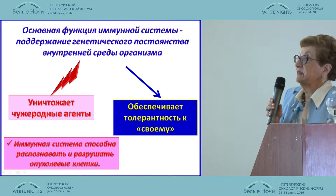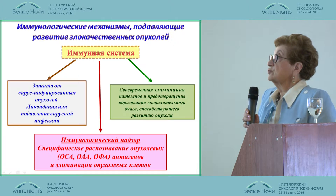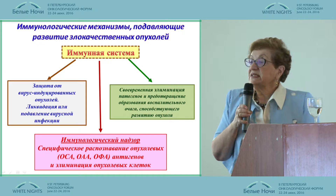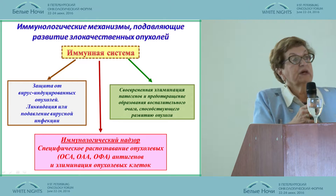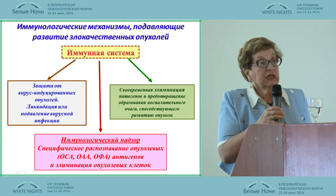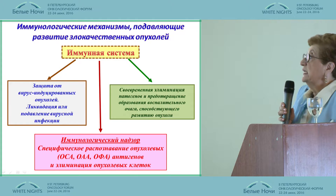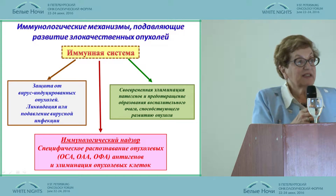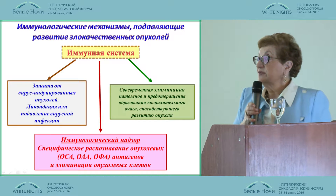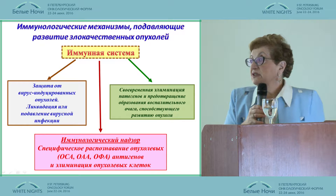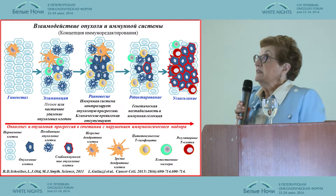The key function of the immune system is genetic stability, elimination of non-self antigens, and the ability to destroy tumor cells. Immune system protection from viruses — we know that some tumors like papillomavirus and Epstein-Barr virus usually cause tumors. Timely elimination of pathogens and prevention of inflammatory processes augments tumor development. And of course, this is immunosurveillance and tumor elimination.